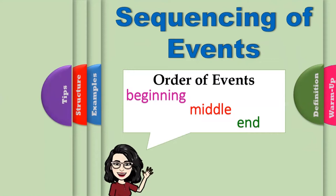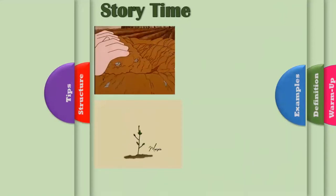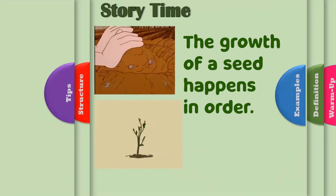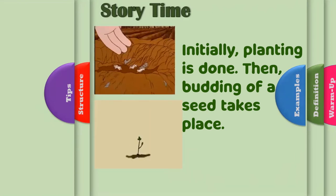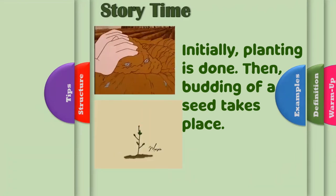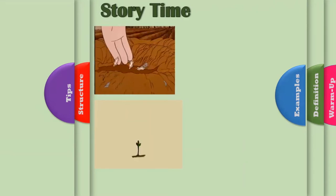For this exciting episode, we are going to read a story. But before we go straight to the story, I am going to show you how sequencing of events happens. Take a closer look at these pictures. What do you notice? The growth of a seed happens in order. Initially, planting is done. Then, budding of a seed takes place. And finally, it grows into a full-grown plant. The question was easily answered through the aid of pictures.